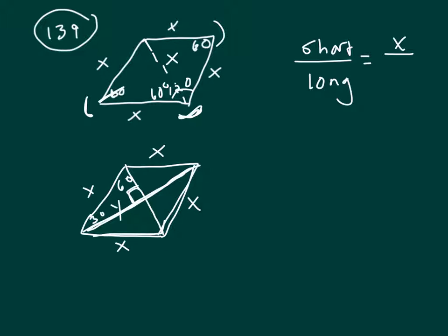Let's call this Y. We're trying to find the length of the long diameter. Now, I know, and you should memorize, if you have a 30, 60, 90 triangle, the relationships of the sides are 1, 2, and square root of 3.